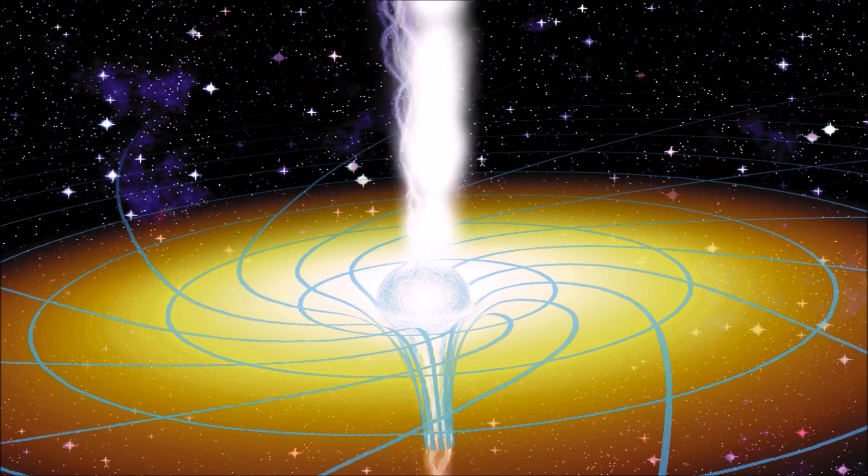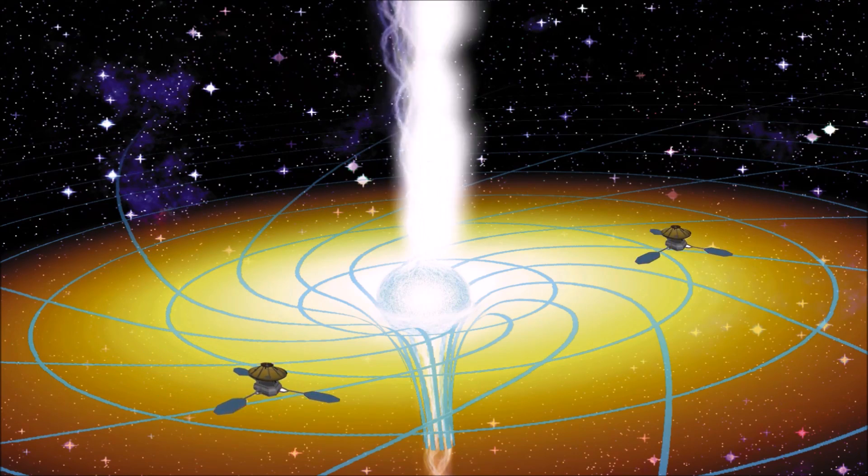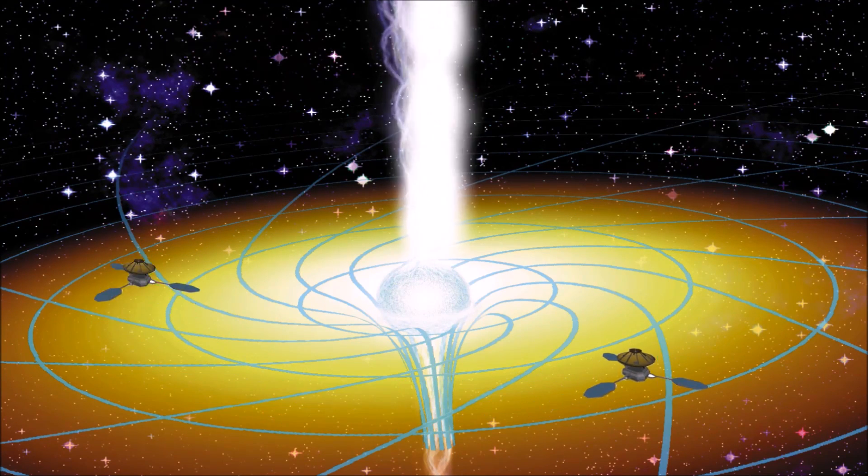When a black hole rotates, it doesn't rotate by itself. It drags the space-time around it, which creates a current in space-time. If we throw two probes to orbit the black hole in opposite directions, the probe orbiting along the current will have a lesser time period than the probe orbiting in the opposite direction.